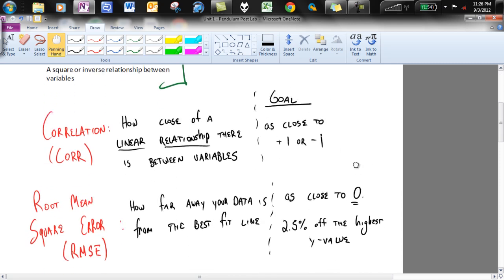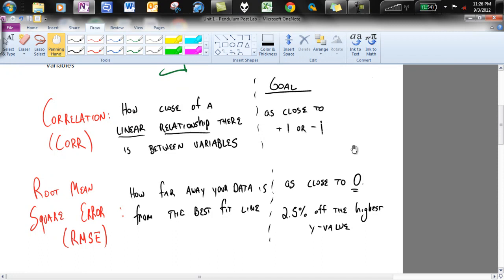So take a quick look here. Correlation and root mean square error. Here are two definitions. Correlation is the idea of how close of a linear relationship is there between the variables. You will note that our correlations, our best correlations, will be plus one or minus one. A plus one means that there's a positive correlation. A minus one means there's a negative correlation, which means it's going to be a downward slope.